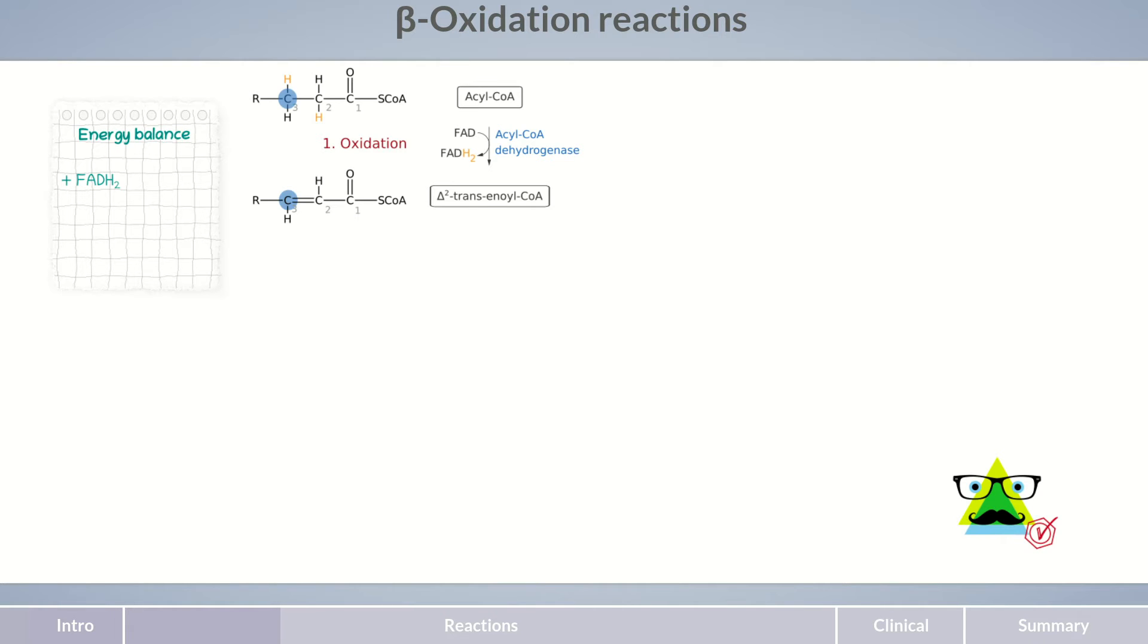In the second step of beta-oxidation, the enzyme enoyl-CoA hydratase facilitates the addition of a water molecule to the newly formed double bond in the fatty acid. This restores a single bond between C2 and C3, the alpha-carbon and beta-carbon atoms. However, the beta-carbon atom of the fatty acid now has a hydroxyl group attached to it. The newly formed molecule is termed beta-hydroxyacyl-CoA. It's important to note that the reaction is a hydration and not an oxidation reaction, which might be suspected because an oxygen atom is inserted into the molecule.